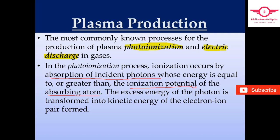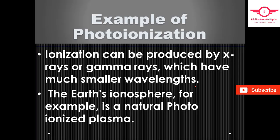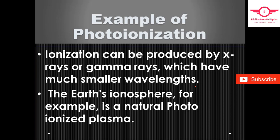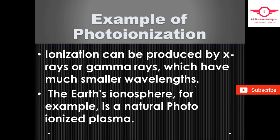This is the most common way to produce plasma using photo ionization. For example, we can use X-rays and gamma rays, which are very high energy. Earth's ionosphere is a natural photo-ionized plasma, making this one of the most common ways to produce plasma.